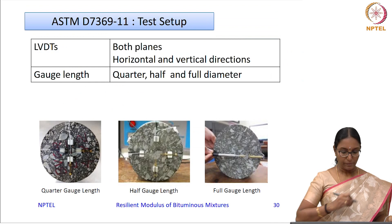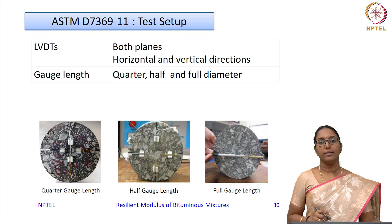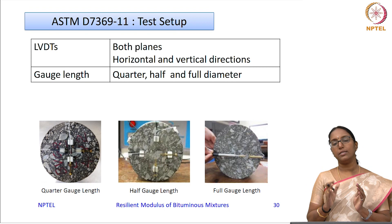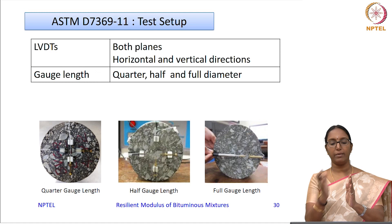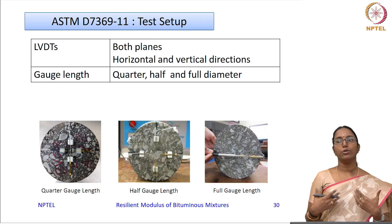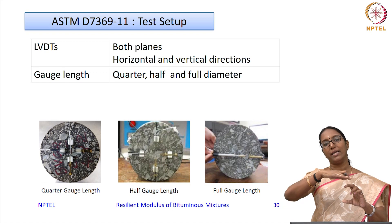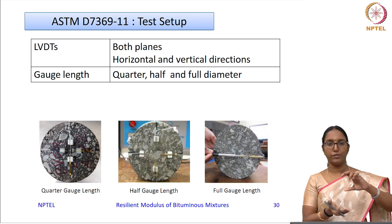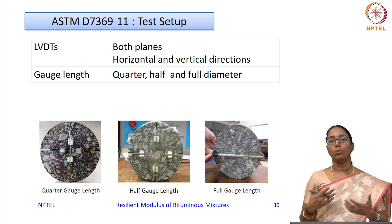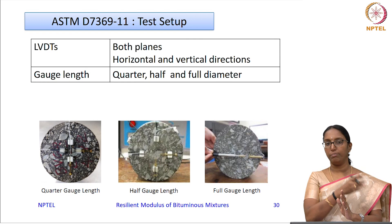An improvement in the new ASTM standard concerns where to fix the LVDTs. In the earlier version, LVDTs were fixed only on one plane — either the right or left — which introduced repeatability issues depending on how the specimen was oriented. To avoid this, the new standard requires LVDTs to be placed on both planes: on the right as well as on the left.